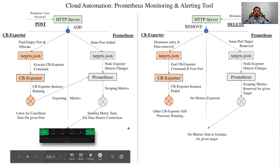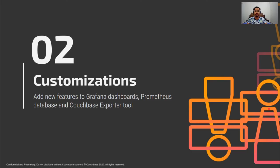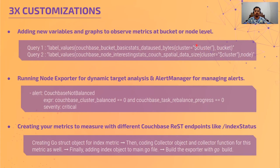Now let's move on to addressing the customizations limitation. Customizations play a very big part in a monitoring solution — there may be a bunch of metrics you don't need, and very specific metrics of utmost importance to you. Ideally your monitoring tool provides those out of the box. There are three customizations to discuss: first, at the Grafana dashboard level; second, at the alert manager level; third, by directly rebuilding the Couchbase exporter.